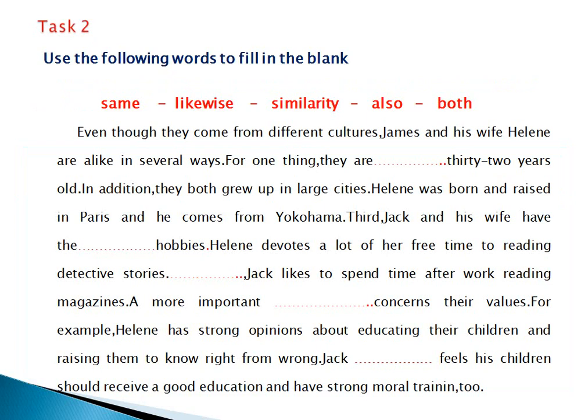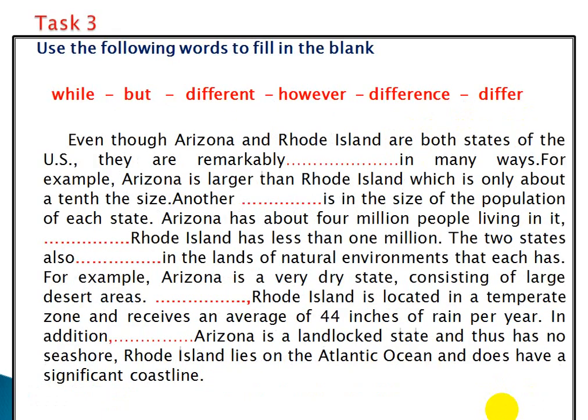In task number two, you are going to use the following words to fill in the blanks. These words are used to show similarities, and in this paragraph we are talking about the similarities between James and his wife. In task three, you are going to use the following words to fill in the blanks: while, but, different, however, difference, differ. In this paragraph we are speaking about the differences between two states: Arizona and Rhode Island.